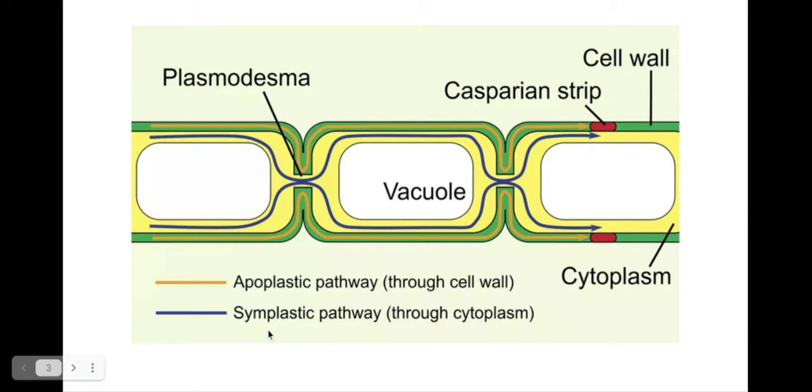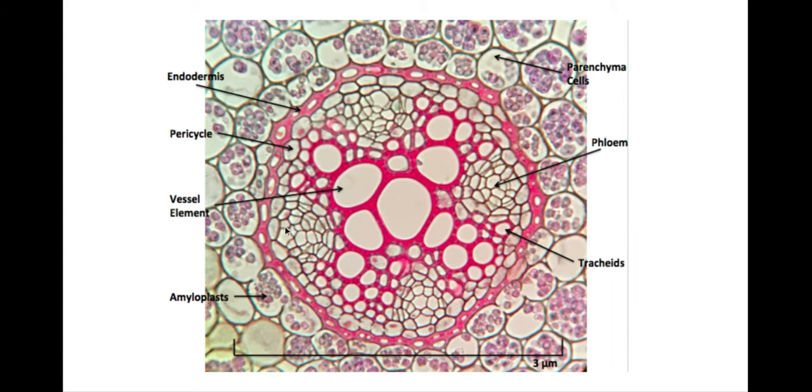The other route is a symplastic pathway and this is where water will travel within the cell, the cytoplasm of the cell, and it'll pass from cell to cell via the plasmodesmata which are like tiny paths between the plant cells. So those are the two routes that the water will take to reach the xylem and that casparian strip is in the endodermis.